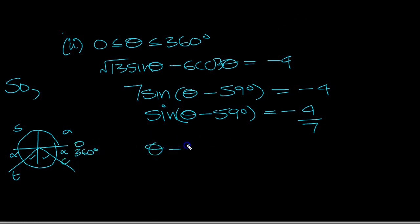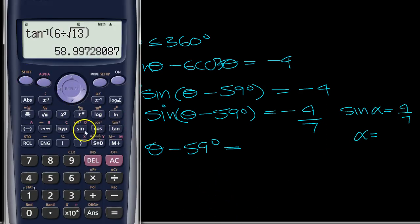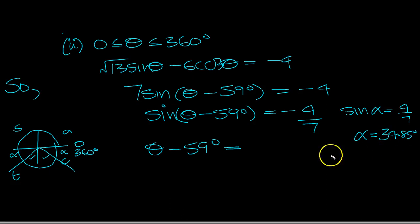So theta minus 59 then, so what's the angle? Shift sine of 4 divided by 7, which is 34.85 degrees. So the first solution then would be the angle in question, which is theta minus 59 degrees is equal to 180 plus this, 214.85 degrees, and the other angle is 315.15 degrees.